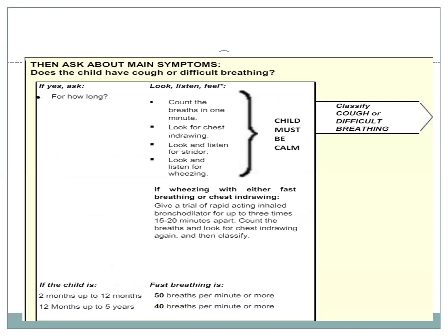For respiratory issues, we count the breaths in one minute and look for chest indrawing. Fast breathing thresholds from the chart: 50 breaths or more per minute for 2 to 12 months, and 40 breaths or more for 12 months to 5 years. We also look and listen for stridor, which is a high-pitched sound produced due to upper airway obstruction, and for wheeze, a whistling sound during expiration indicating obstruction at the level of the bronchioles.